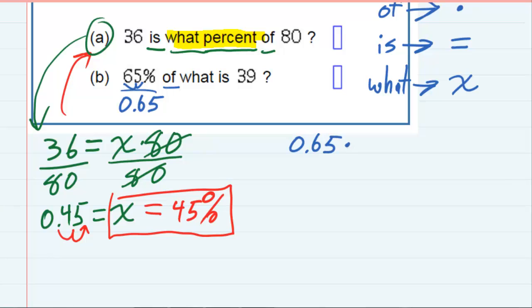'Of' means multiply. 'What' is my variable X. 'Is' means equal. And I finish it off with 39.